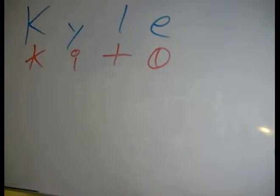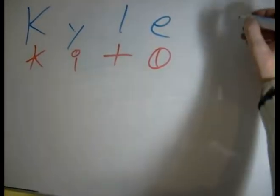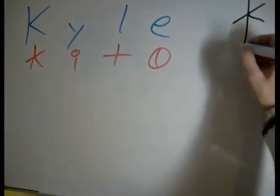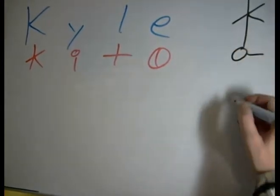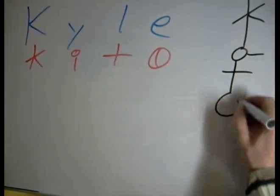This is the name Kyle in Dscript. So first let's look at the simplest possible way to connect these letters: K, Y, L, E.